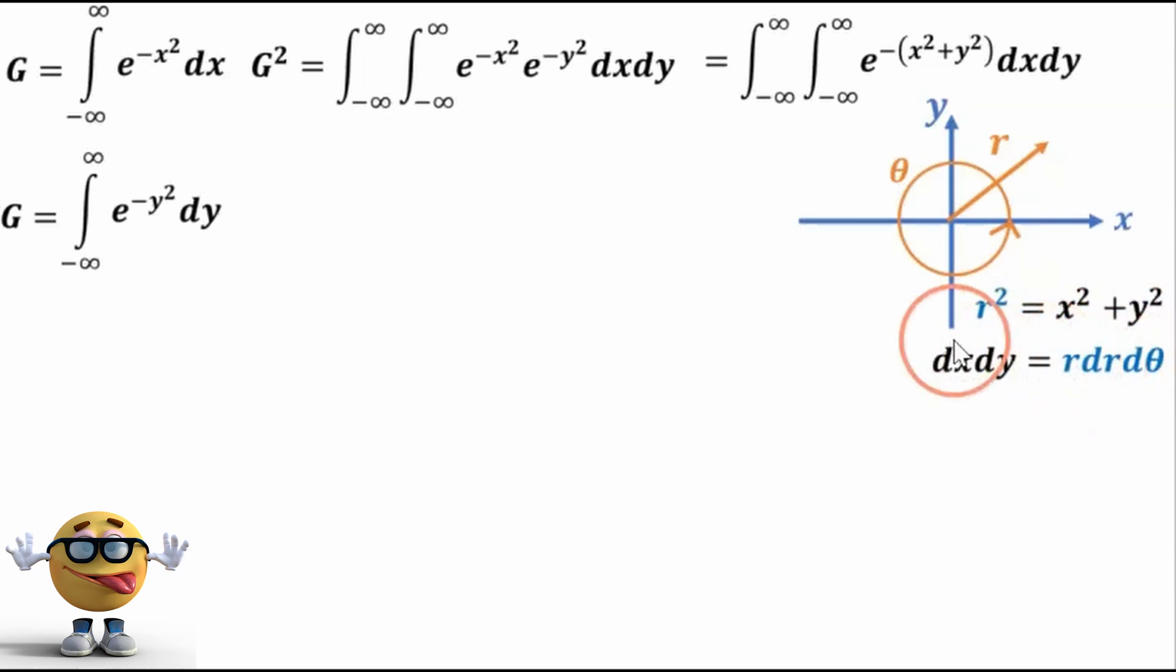Let me know if you want me to explain this, how I got this part in the comments. So r goes from 0 to infinity, and theta goes from 0 to 2 pi, and if that happens, then we've covered the range of negative infinity to infinity of x and y on this.